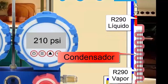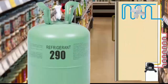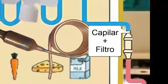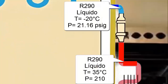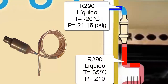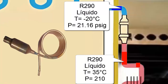The R290, now in a liquid state and at a temperature close to the ambient temperature, exits the condenser and moves to the capillary tube to restart the cycle. In the capillary tube, the pressure and temperature of the refrigerant decrease significantly, so it returns to the initial pressure of 21 pounds per square inch and minus 20 degrees Celsius.